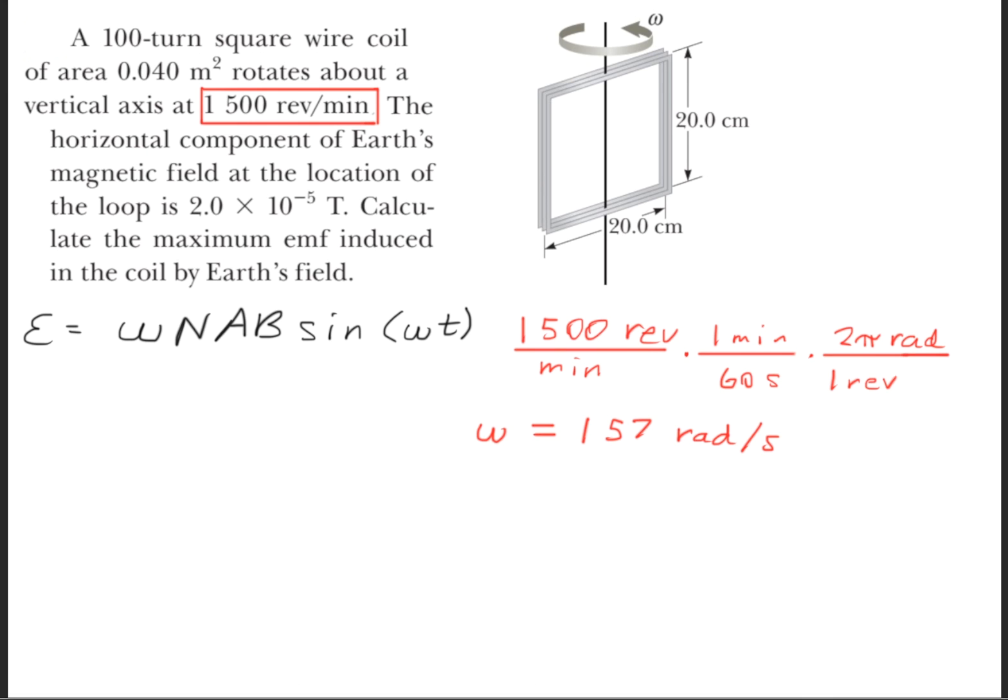So to begin, we need to find what omega is, or our angular velocity. We were given revolutions per minute, and that is not the standard units. We need to get it to radians per second. So we'll start off with 1,500 revolutions per minute, and for every one minute we have 60 seconds, and for every one revolution we have two pi radians.